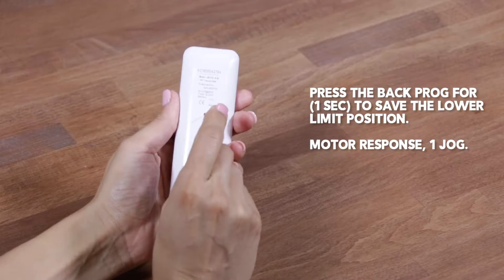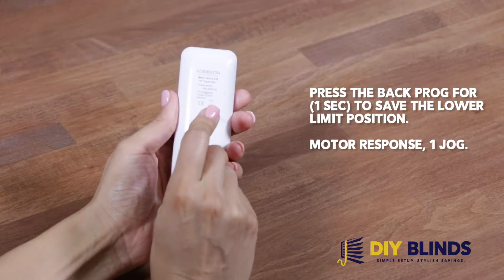Press the back prog button for 1 second to save the lower limit position. Motor responds with 1 jog.